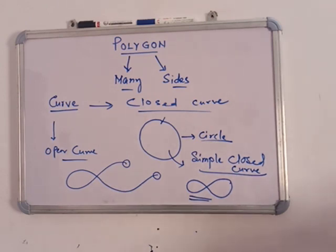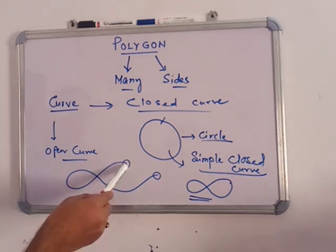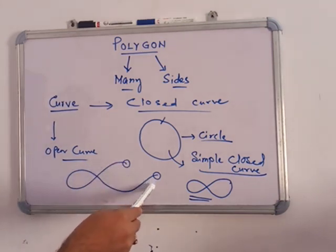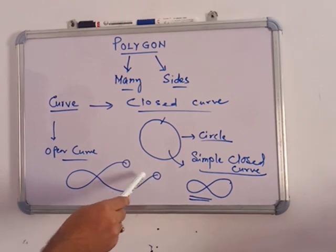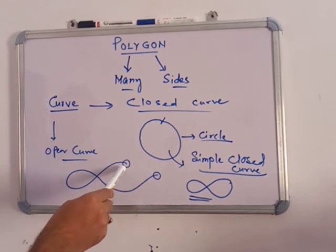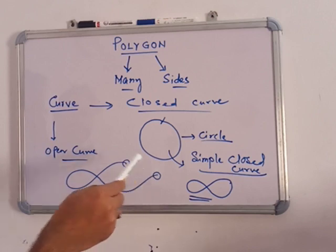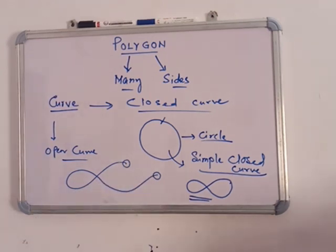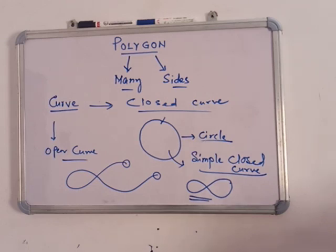So that means a circle is a closed curve. For the open curve, one point here is the beginning point and one point here is the ending point, but they are not the same. So when the beginning point and ending point are not the same, that means this is an open curve.